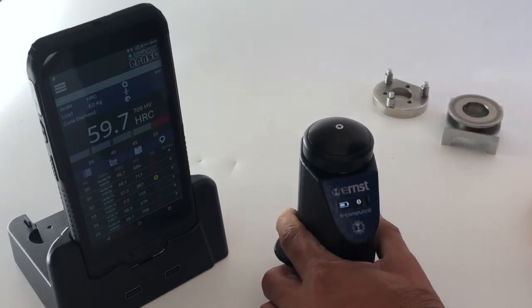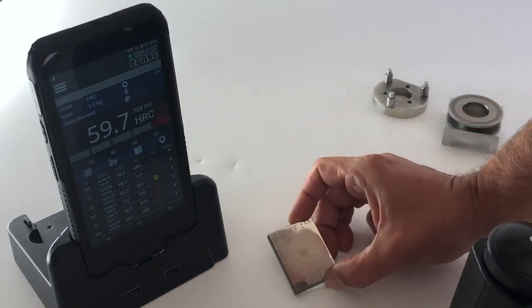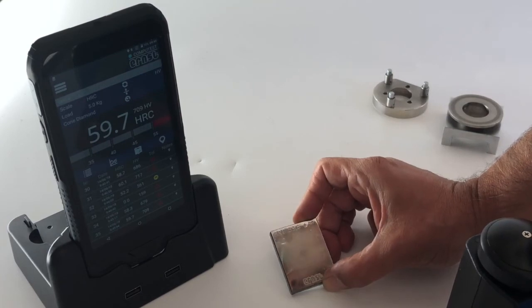You got 59.7, which is exactly what it should be, 59.8 plus minus 0.5. That's perfect.